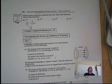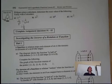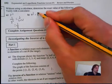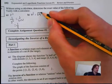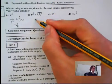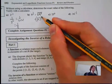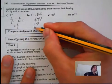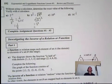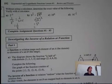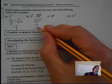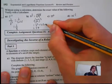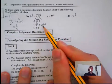The next one is 9 to the 3 over 2. This is the same thing as the square root of 9, and then we cube it. Square root of 9 is 3, so we get 3 cubed. 3 times 3 is 9, multiplied by 3 is 27. So 9 to the 3 over 2 equals 27.